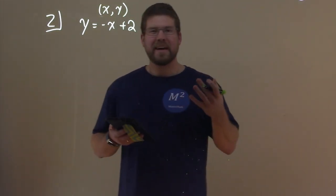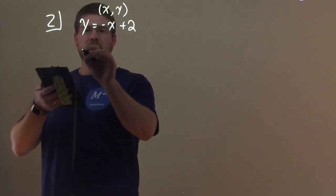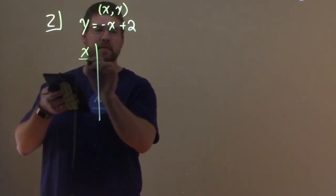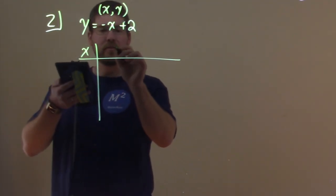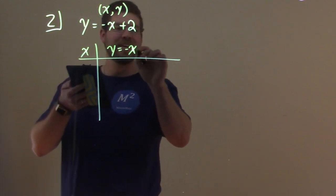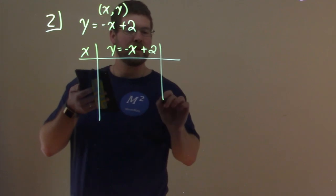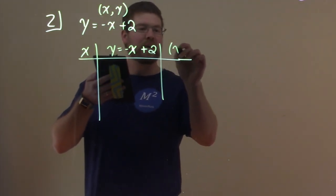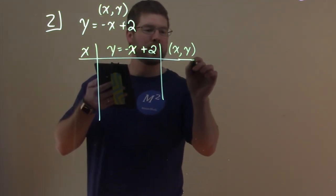So let's make a table here. We're going to have our x values, we're going to have the equation y equals negative x plus 2, and then we're going to have our x comma y coordinate.